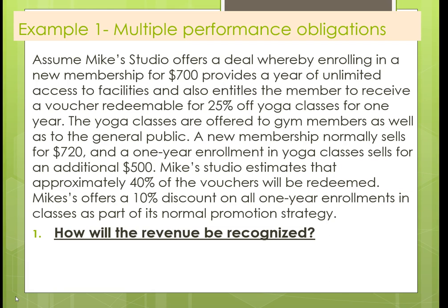A new membership normally sells for $720, and a one-year enrollment in yoga classes sells for an additional $500. We're estimating that 40% of the vouchers will be redeemed. In addition, Mike offers a 10% discount on all one-year enrollments regardless, as part of their normal promotion. How will the revenue be recognized?